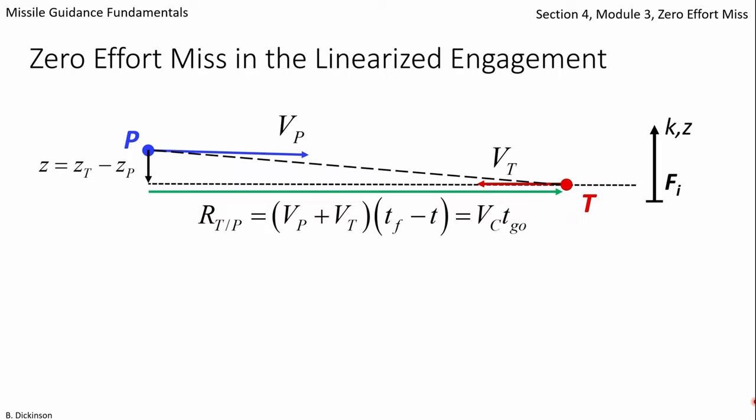The dashed black line connecting pursuer and target is the line of sight direction, giving the line of sight angle when referenced to a horizontal plane.